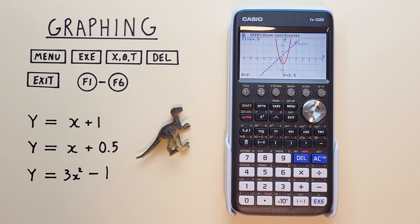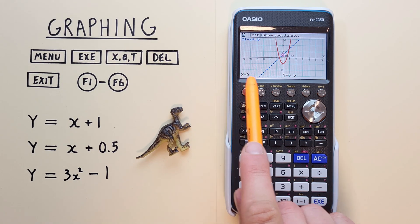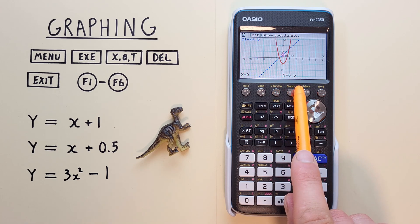To see what Y is at X equals 0, again, we just enter our X value. So 0, EXE, and we see X equals 0, Y equals 0.5.